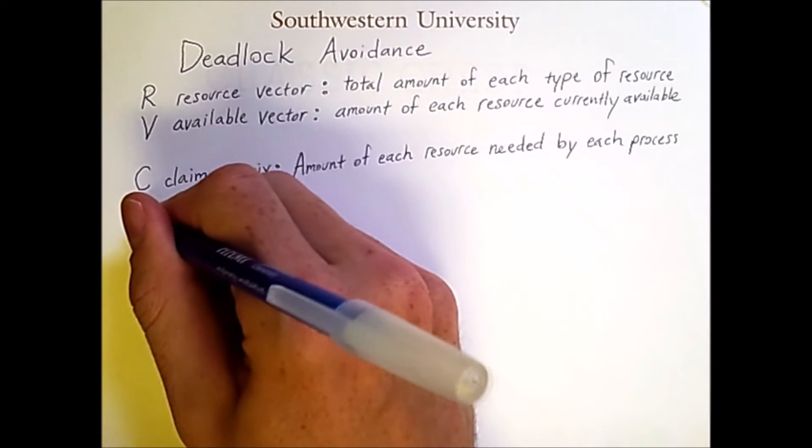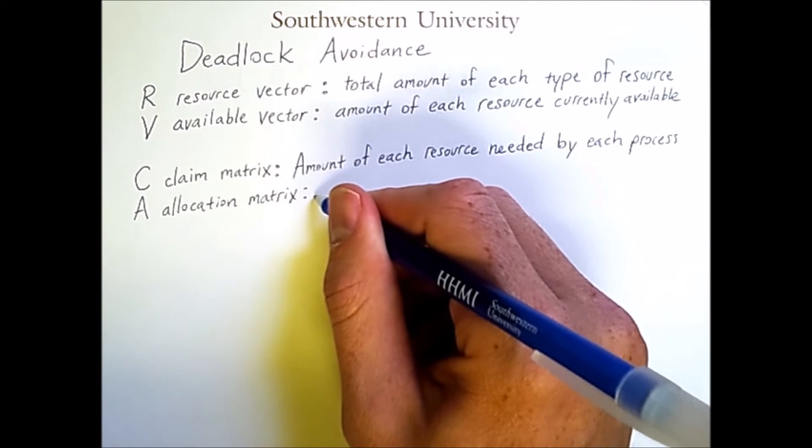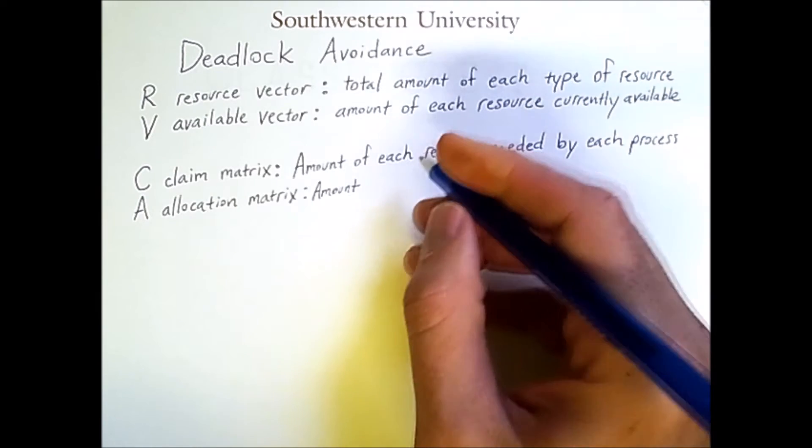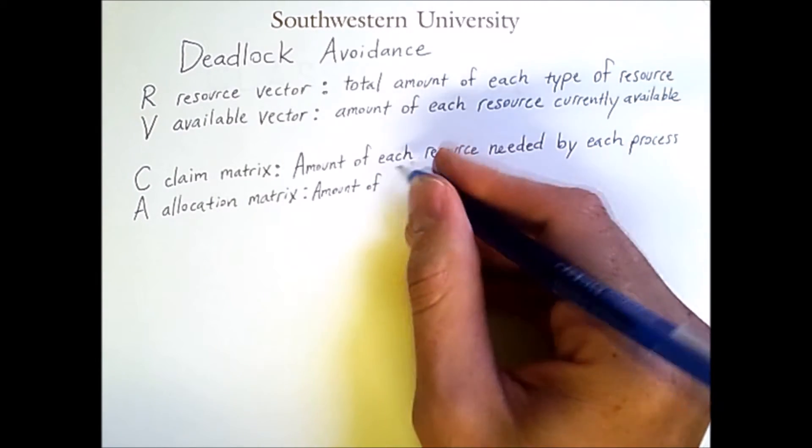Lastly, we have A, which is an allocation matrix. This is the amount of each type of resource currently possessed by each process.